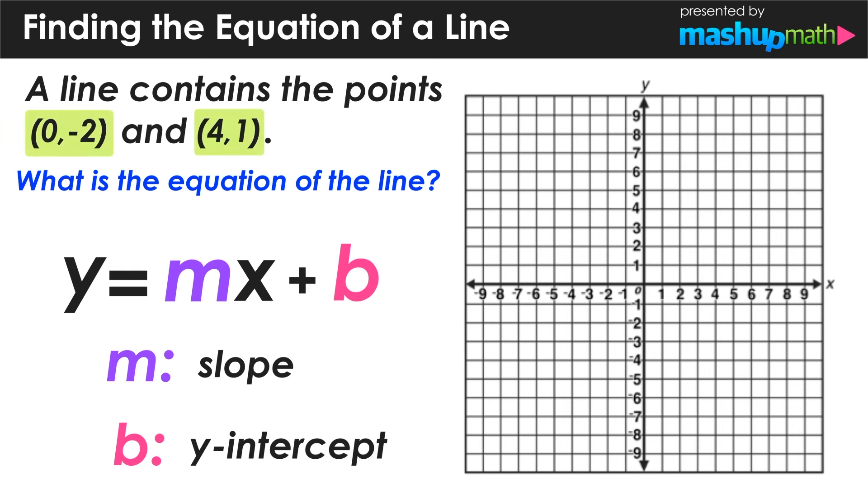And we can see what this line looks like by plotting those two points on the graph, 0, negative 2, and 4, 1, and then drawing the line that passes through them.